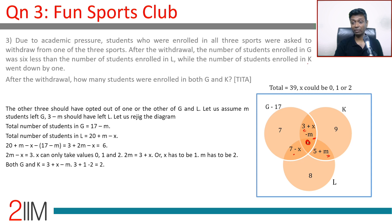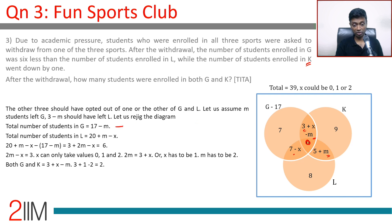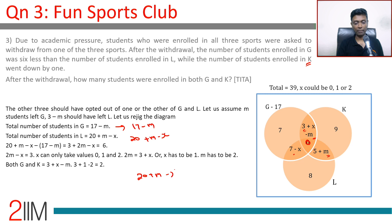After redistribution, total students in G: only-G plus updated intersections gives 17 minus m. Total students in L: 8 plus (7 minus x) plus 5 plus (3 plus x minus m) plus 0 = 20 plus m minus x. The difference L minus G equals 6: (20 plus m minus x) minus (17 minus m) equals 6, which simplifies to 3 plus 2m minus x equals 6, so 2m equals x plus 3.